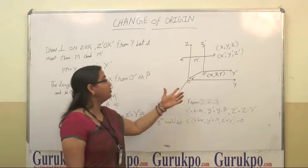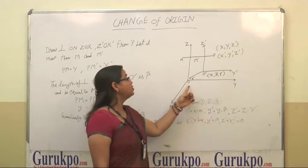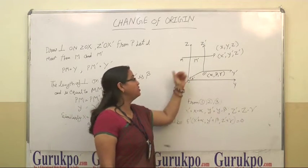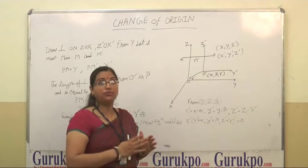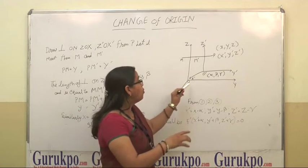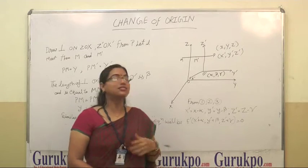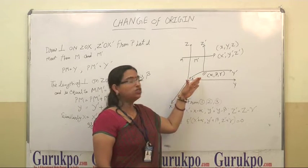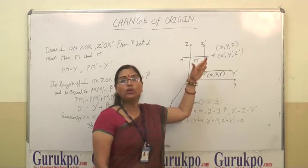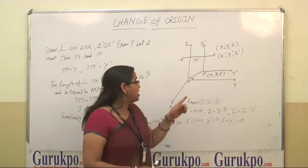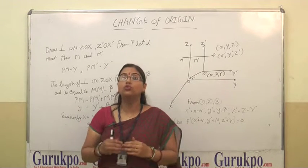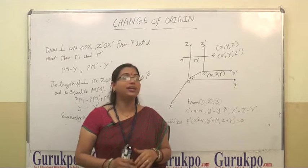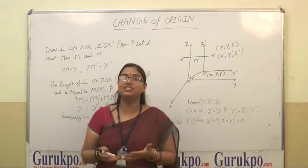My today's topic is Change in Origin. Here we see a three-dimensional axis that is OX, OY and OZ. Now if we shift the origin O from O to O', then the new axis will be O'X', O'Y' and O'Z'. Now we change the location of origin from O to O', then we have to find out the relation, what will be the change in the axis.